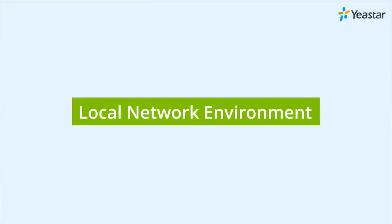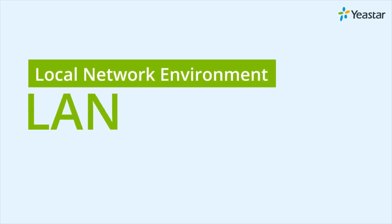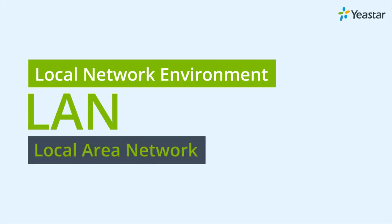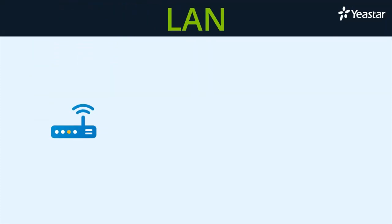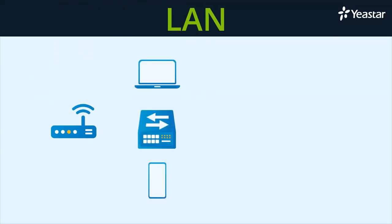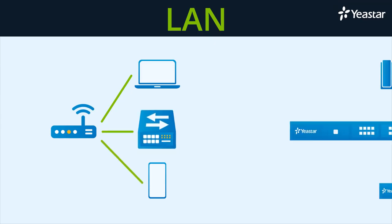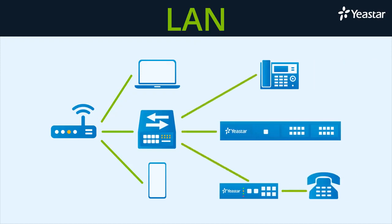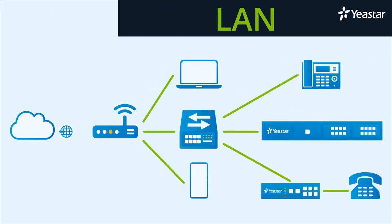First thing first, what's a local network environment in the office? In simple words, the local network environment, professionally called LAN for local area network, consists of a router and devices connected to it, such as your computer, smartphone, or any type of IP-based equipment. Usually, switches will be deployed to connect more devices to the router. If we connect broadband to the router, all the devices will be able to access the internet. A router is more like the main port that controls the traffic to the outside world.